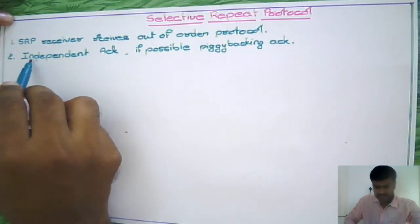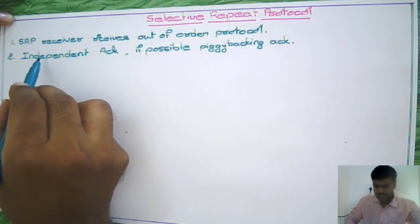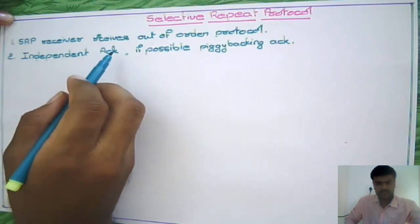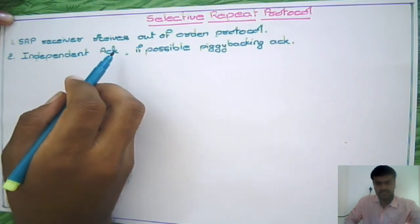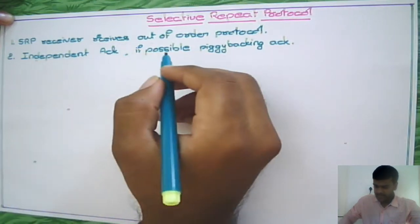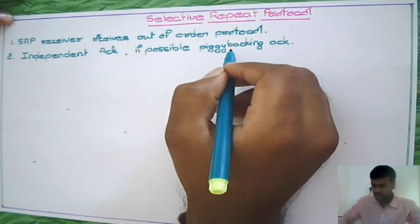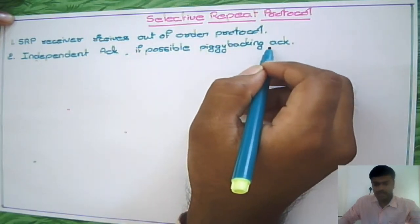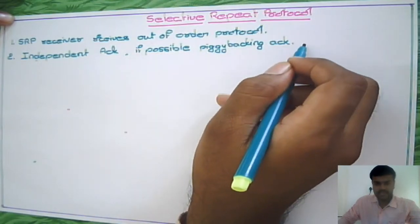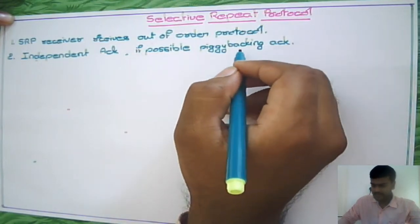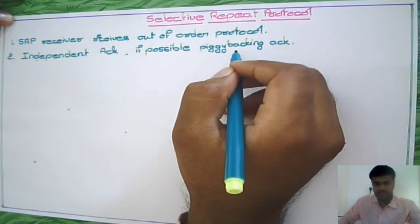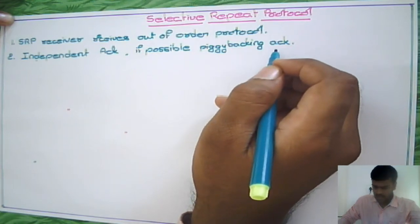The second characteristic is that it gives acknowledgement for each packet — independent acknowledgement for each packet. But whenever it is possible, it is going to give piggybacking acknowledgement, meaning it uses the piggybacking concept.